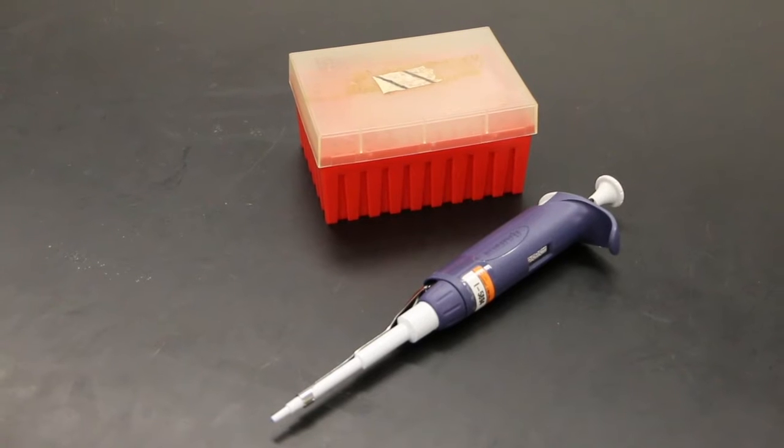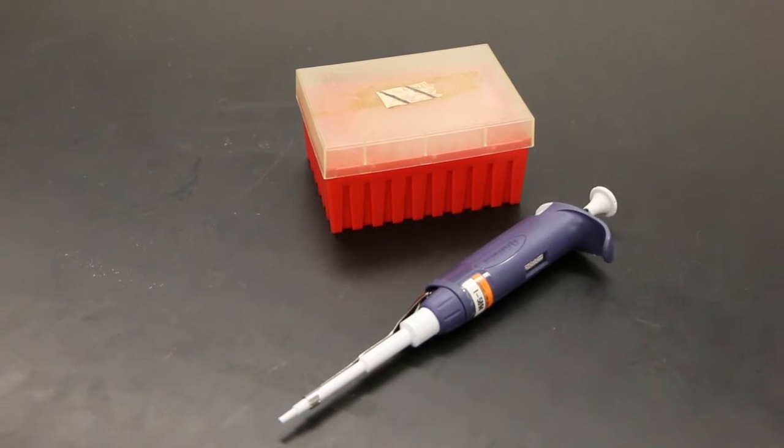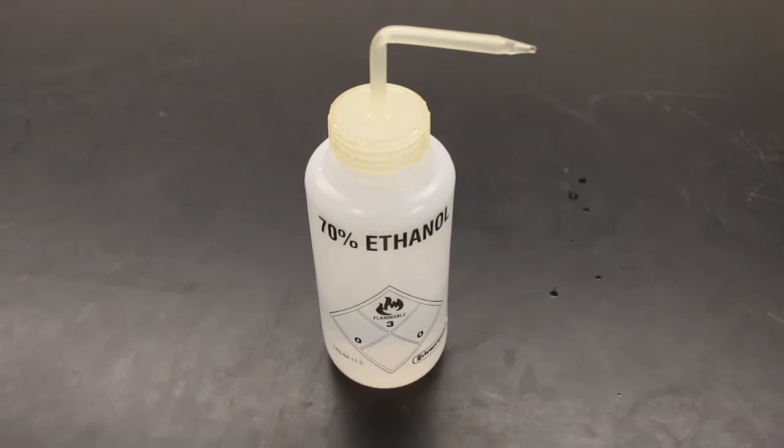You'll also need some sterile tissue culture flasks (25ml size is what we're using), a 10ml micropipette and sterile tips, and some 70% ethanol for sterilizing your workspace.